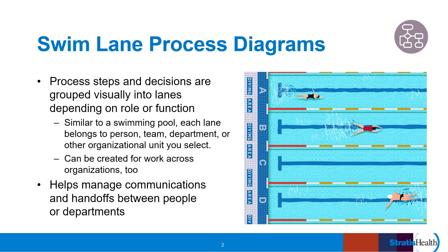Each lane is labeled accordingly. The lanes show who is responsible for each step in the process. This diagram style allows people to see their responsibilities within an organization efficiently. Swim lane diagrams are a good way to visualize the handoffs that are occurring between people, departments, or organizations. It helps people understand how their role fits within the system's other moving parts.